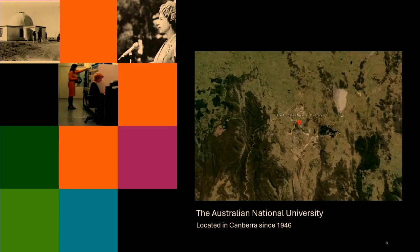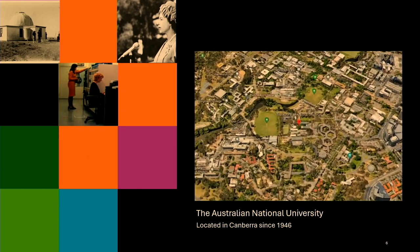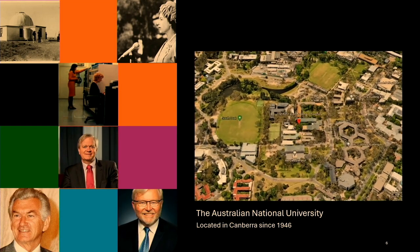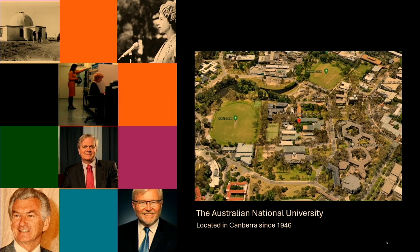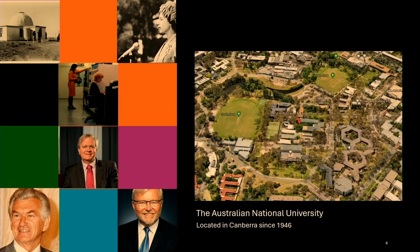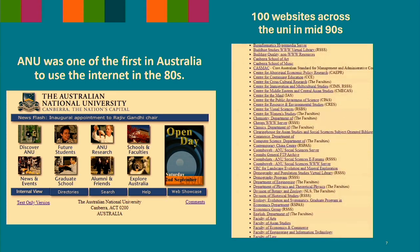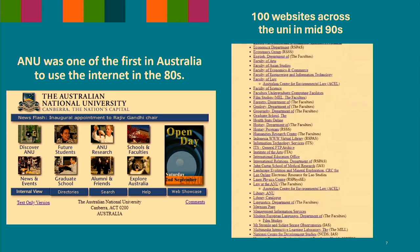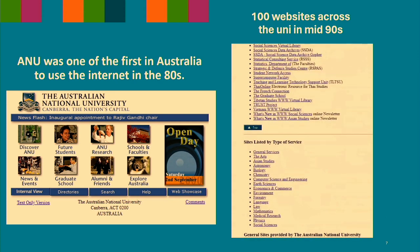The community now has 70,000 students and 4,500 staff members. There are some notable members of politics who graduated from ANU, and there are six Nobel laureates. ANU was one of the first institutions in Australia to use the internet, which was in the 80s — mostly for research purposes — and around the mid-90s there were already 100 websites around the university, believe it or not.